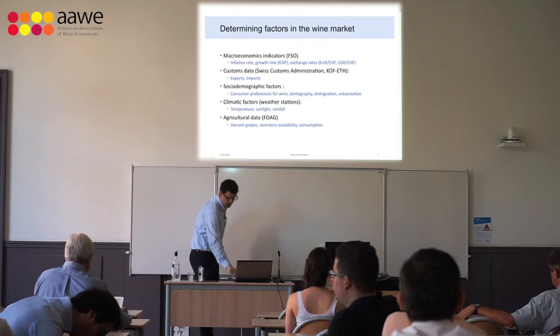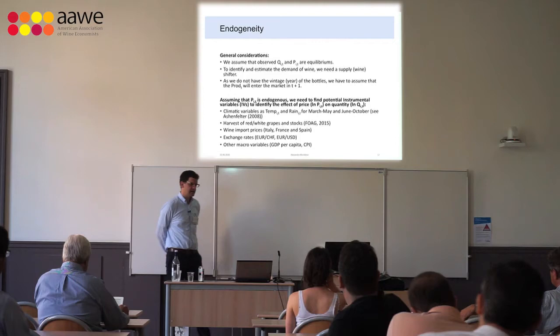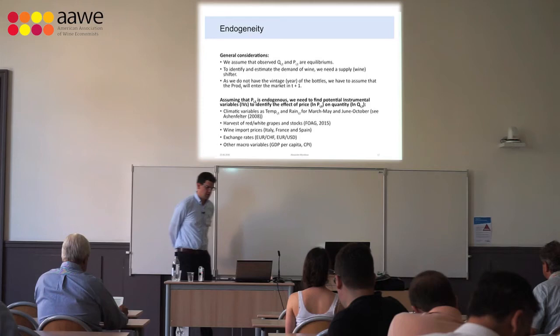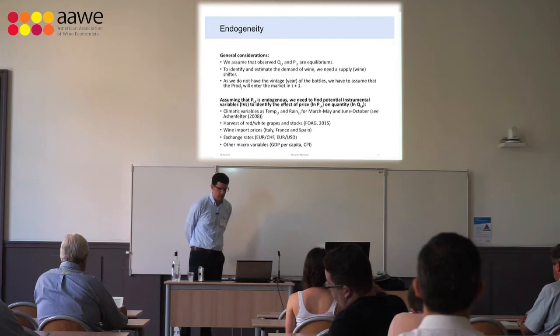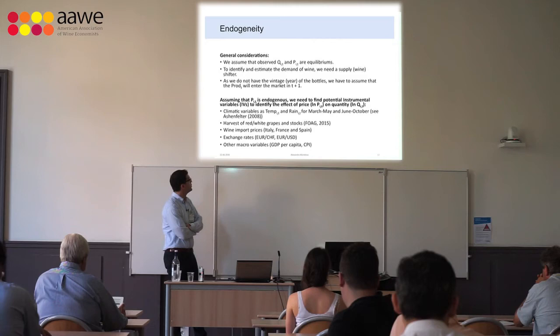To deal with endogeneity, we need to find a supply shifter — something that shifts the supply curve — in order to identify the demand. We have several potential candidates. The first are climatic variables such as temperature and rainfall, following Ashenfelter 2008. We also have harvest data for red and white grapes and stocks. Other candidates include wine import prices, exchange rate, and other macro variables.